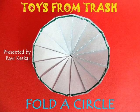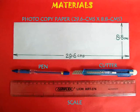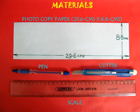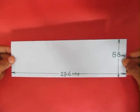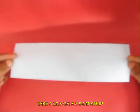From a rectangular strip of paper you can fold a very nice circle. You need a strip of paper which is 29.6 cm long and 8.8 cm wide.